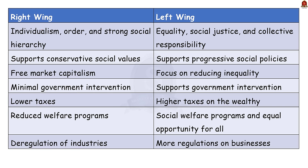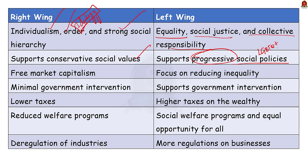Let us look at their ideological differences regarding society. The right wing is associated with individualism, order, and strong social hierarchy. The right also supports conservative social values. But the left wing focuses on equality, social justice, and collective responsibility. It also supports progressive social policies like LGBTQ+ rights, gender equality, and environmental protection.